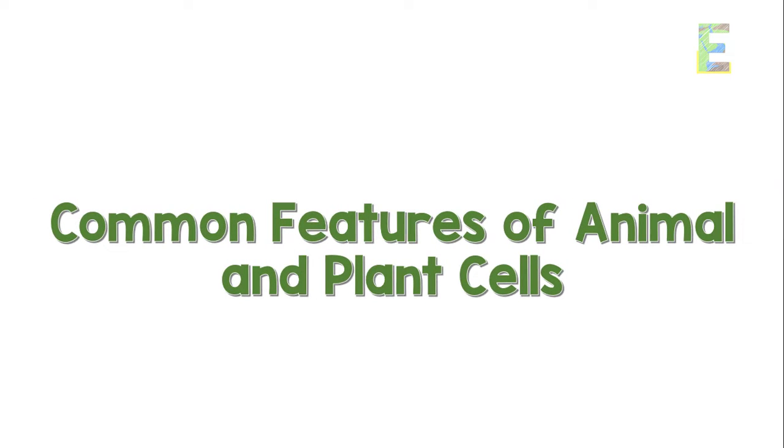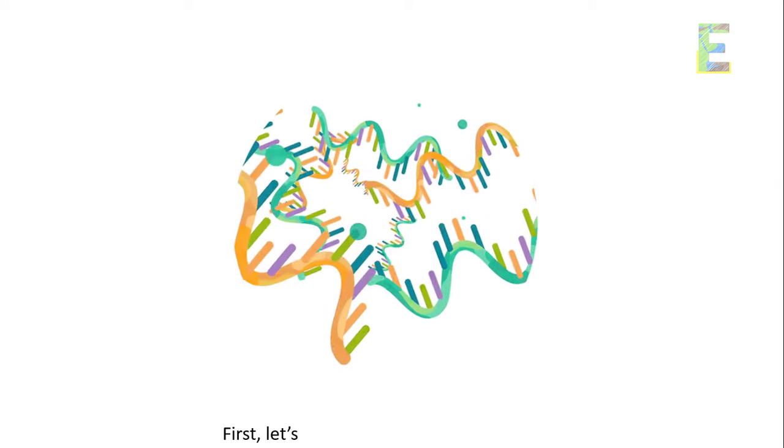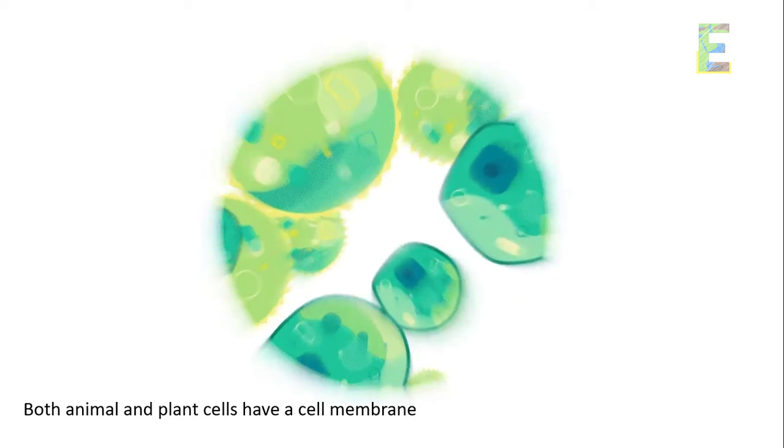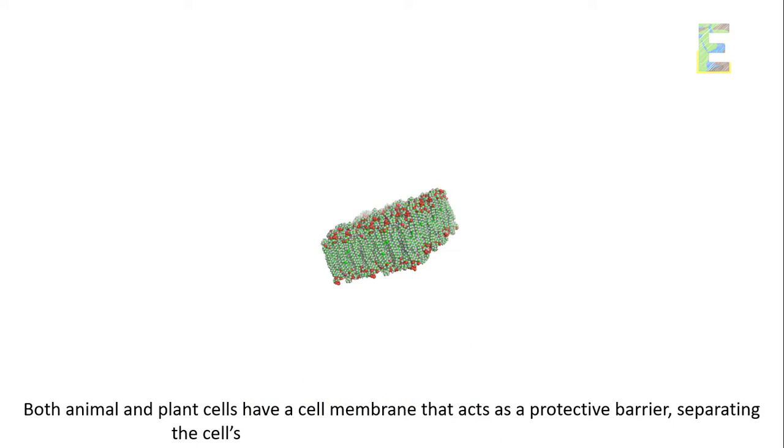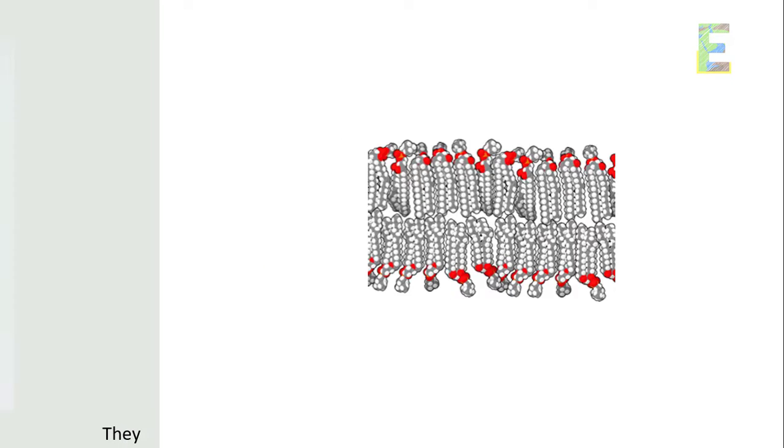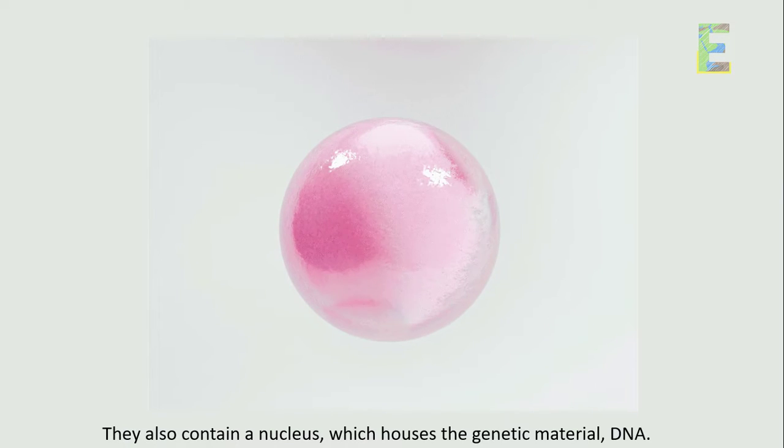Common features of animal and plant cells. First, let's explore the common features. Both animal and plant cells have a cell membrane that acts as a protective barrier separating the cell's internal environment from the external world. They also contain a nucleus, which houses the genetic material, DNA.